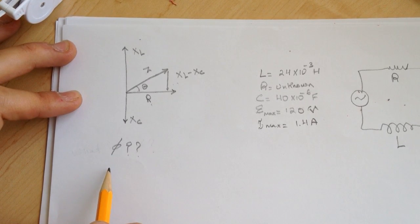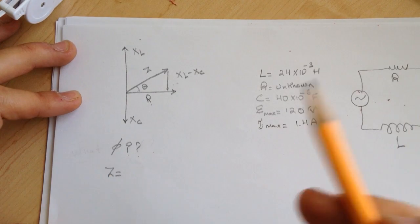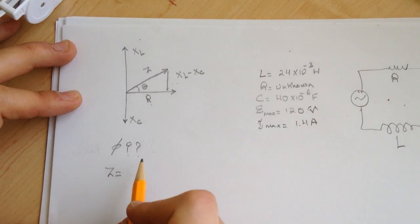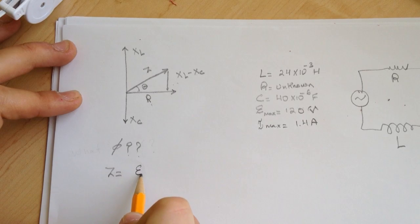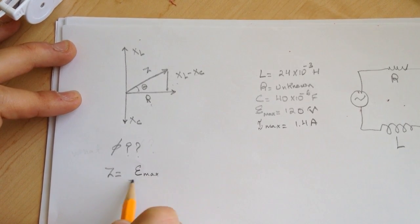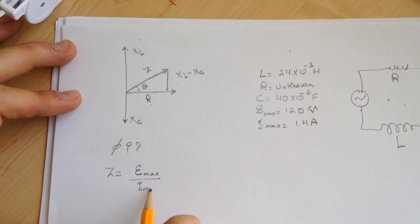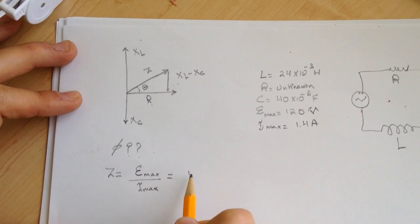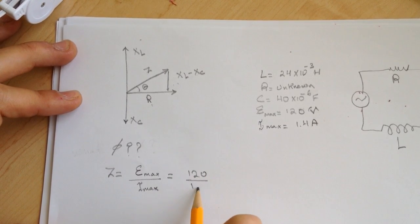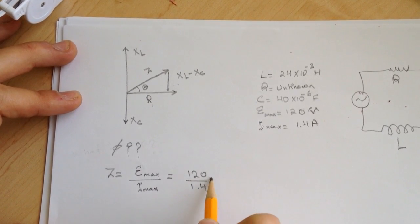So I'll find the Z first. The impedance is like the resistor for the whole thing. And this is the voltage of the generator max over Imax.